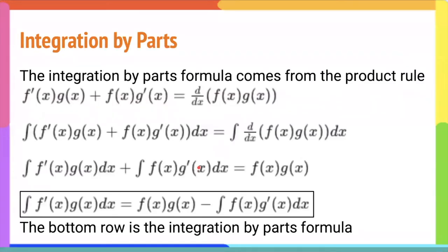Today we're first going to learn about integration by parts. The integration by parts formula comes from the product rule. The product rule states that the derivative of f(x)·g(x) equals f′(x)·g(x) + f(x)·g′(x). If we integrate both sides, the derivative and integral cancel on the right, leaving f(x)·g(x). Subtracting the integral of f(x)·g′(x) dx from both sides gives us the integration by parts formula.